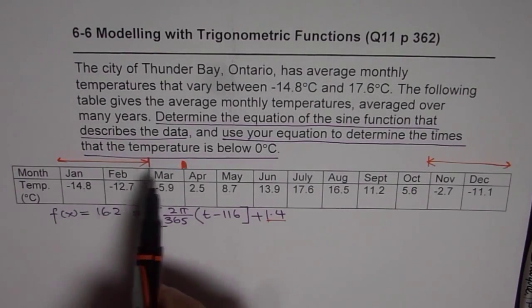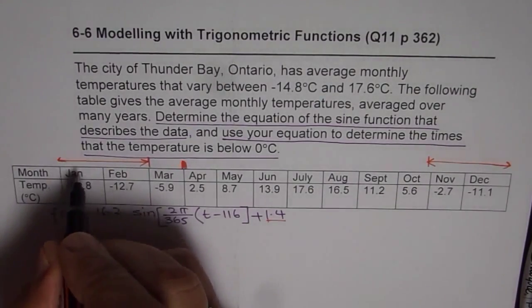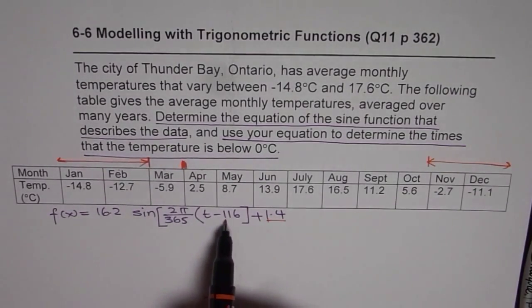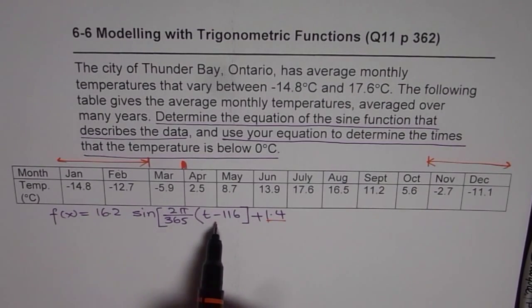Counting days by 30s. So we say 30, 60, 90, 120 for April. So it is less than 120. That gives you approximate idea of the equation also. So these are a few tips which you could use to get approximate solution at least and get some marks in the test.